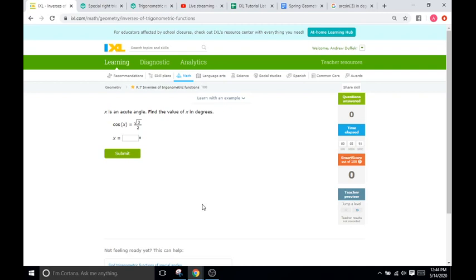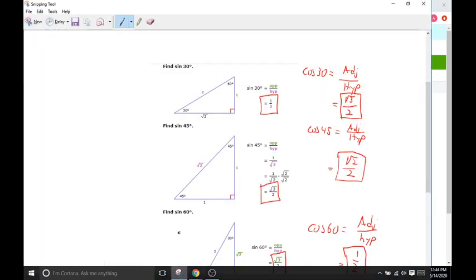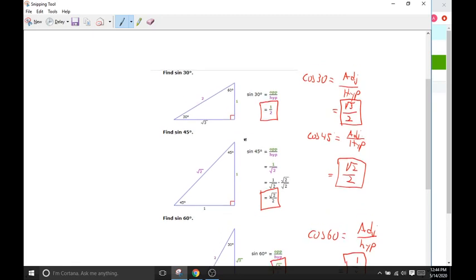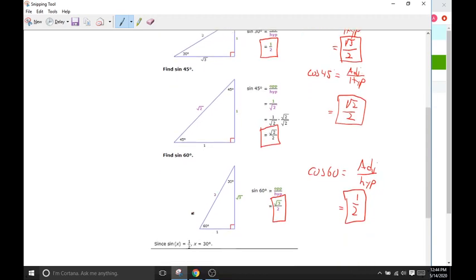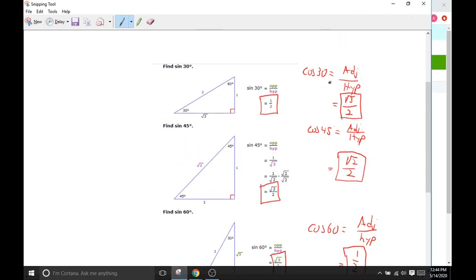There are a couple things you need to solve these problems with. The first one is an understanding of the different special right triangles. Right here I pulled a diagram from IXL and then added to it, just shortcuts to see what sine of 30 equals, what cosine of 30 equals, sine and cosine of 45, and then sine and cosine of 60. This is going to help your work go much quicker.